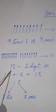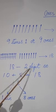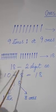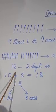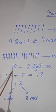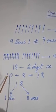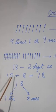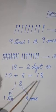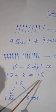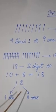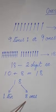Now here 18, it is a 2-digit number. 18 is the 2-digit number and here we have only 1 ten. So we can write like this: 10 plus 8 is equal to 18. So in 18 we have 1 ten and 8 ones.